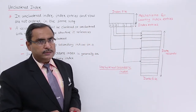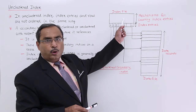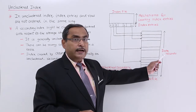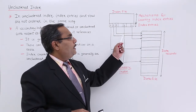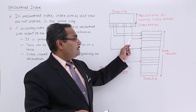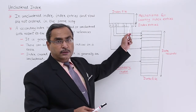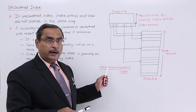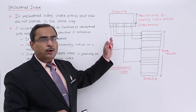Let us look at a diagram for better understanding. Here you can see the secondary index, which is the mechanism for locating index entries. These are the index entries, and this is the data file containing data records. The first index entry is pointing to the fourth record, the second index entry to the second record, the third index entry to the first record, and the last index entry to the third record. You can see that the index entries are not pointing to the records in the same order as they appear in the data file — this is an unclustered secondary index. Secondary index means it is detached from the data file, and unclustered means the orders are not the same.